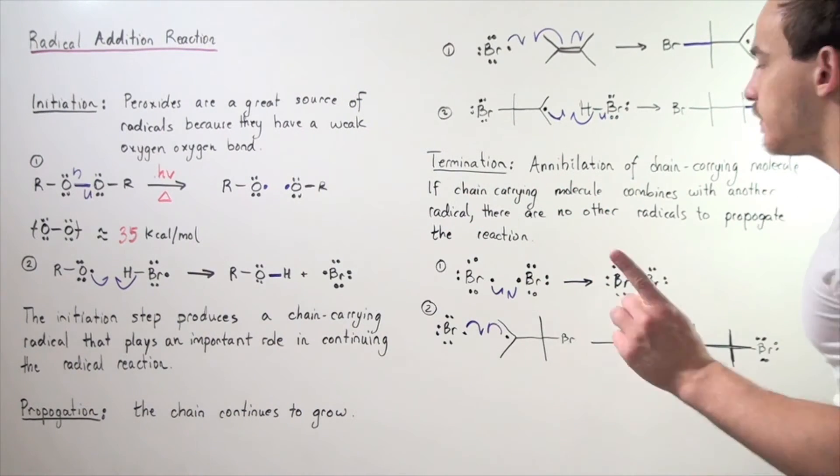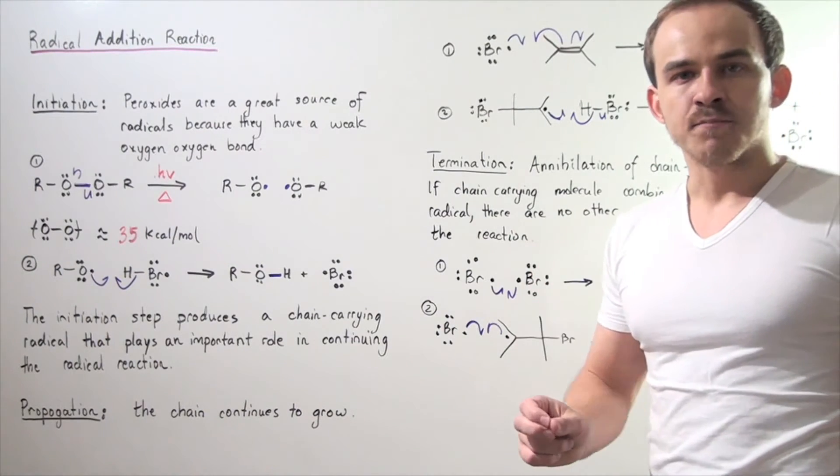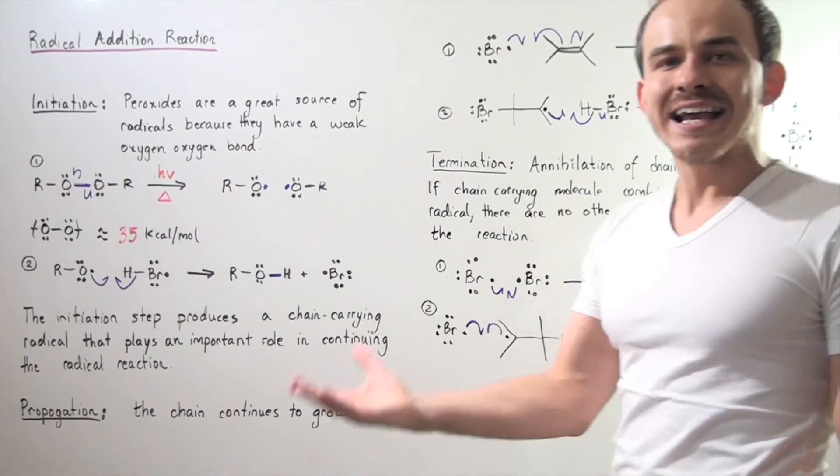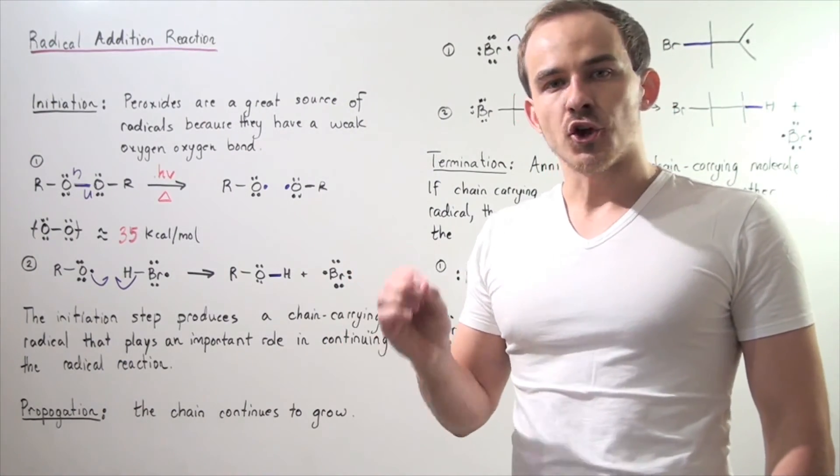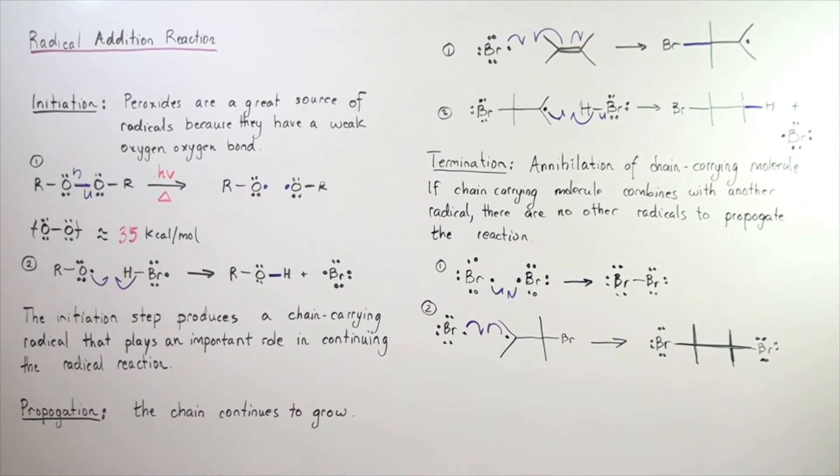Termination is the final step. It's the annihilation of a chain-carrying radical. In other words, this radical reacts with a second radical in an exothermic fashion to produce some molecule that's no longer a radical.